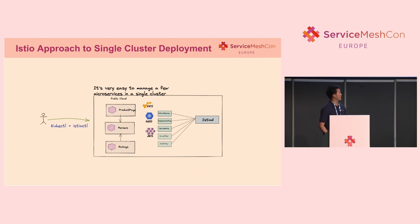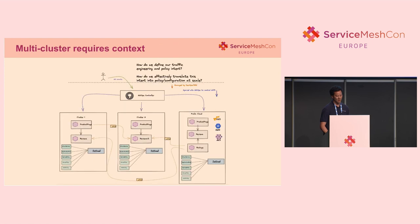The GitOps or the Istio approach to single-cluster deployment is pretty simple. It's easy to manage a few microservices and get started with a single cluster. However, when you move to multi-cluster, it starts to require some context. You have to focus on your team, your networking team — how do you define your traffic or engineering policy intent, and how do you effectively translate this intent into policy or configuration at scale? This gets a lot more complicated as you move to more clusters.